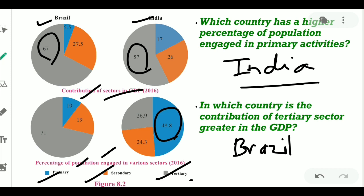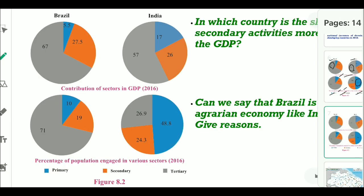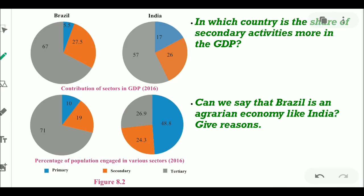In which country is the share of secondary activities more in the GDP? In India the share of the secondary sector is 26%, whereas in Brazil it is 27.5%. Hence the answer for this question is again Brazil.